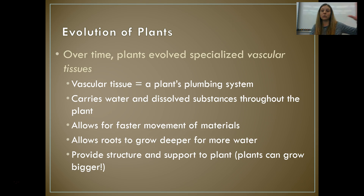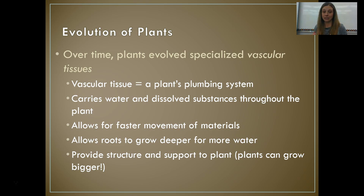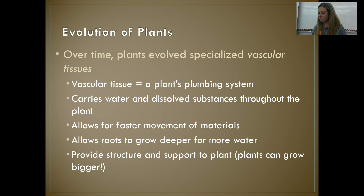Now we are going to evolve to our vascular plants. Over time, plants evolved specialized vascular tissues. A vascular tissue is essentially the plumbing system of a plant — almost like little pipes that allow materials to transport through them. They carry water, dissolved substances, and nutrients throughout the plant. The benefits are that you can move materials faster, roots can grow deeper to get water that's not just on the surface, and they provide structure and support so the plant can physically grow bigger.